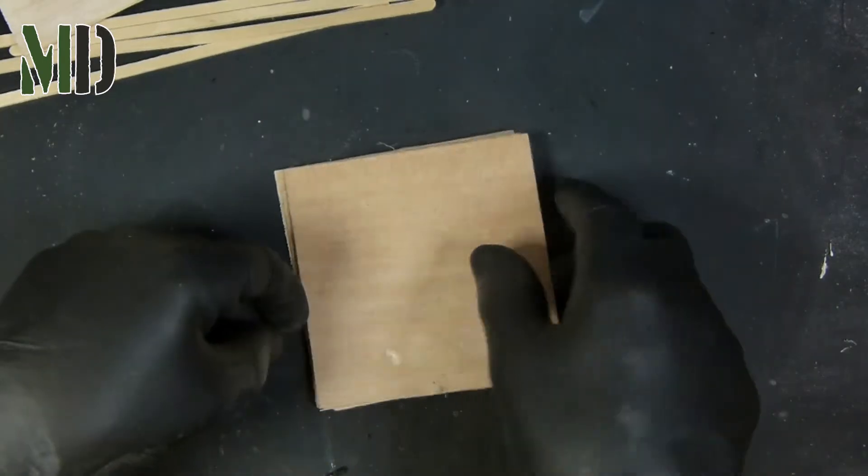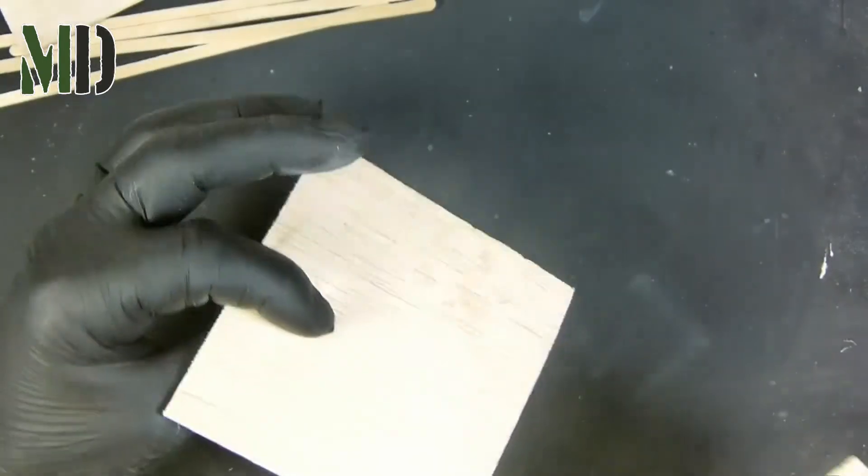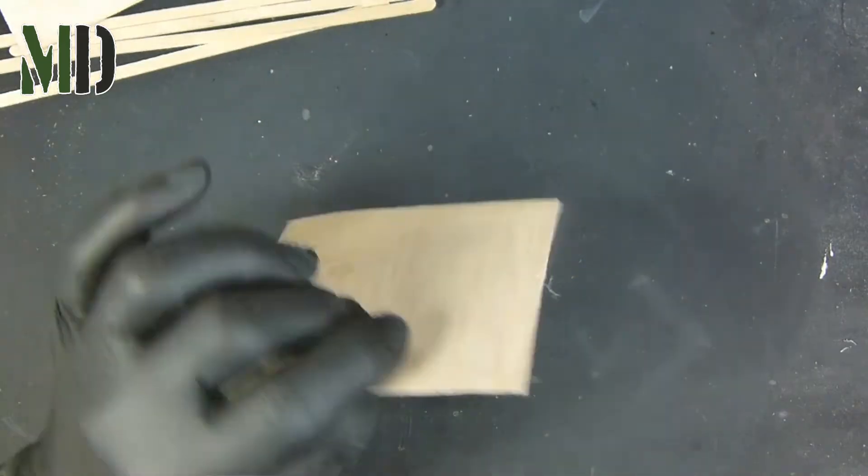These wooden fence panels are really easy to construct. One of the most useful tools I've got is this cork back ruler which stops it from slipping on the wood when you're cutting.